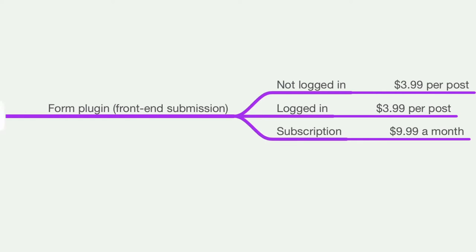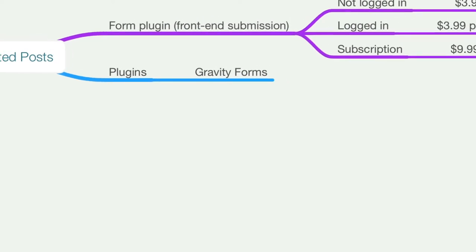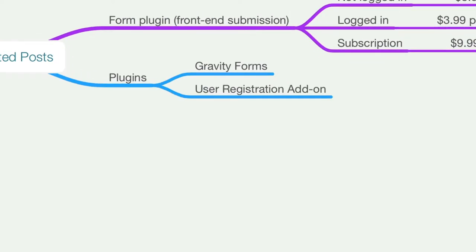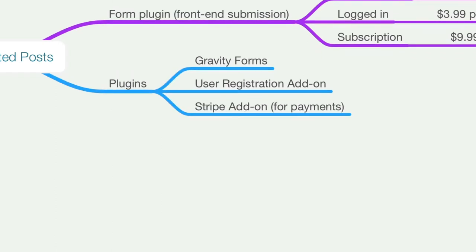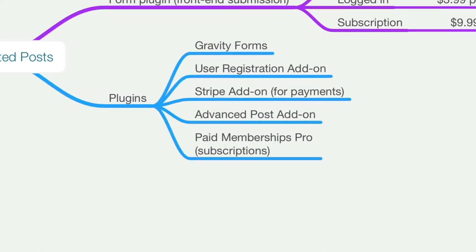Let's go over the plugins we're going to need. We'll use Gravity Forms — in my opinion the best form plugin for WordPress — along with the Gravity Forms User Registration add-on, Stripe add-on for accepting payments, the Advanced Post Creation add-on, and finally Paid Memberships Pro for subscriptions.